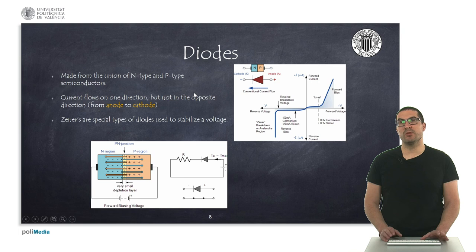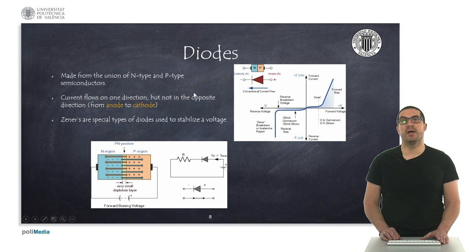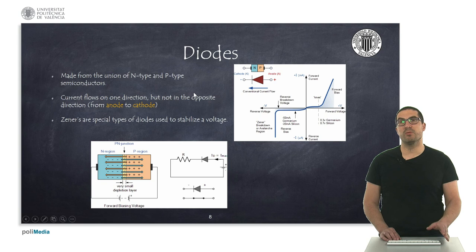Diodes are the most basic semiconductor type. They are made from the union of two different kinds of materials called N-type and P-type semiconductors — different doped materials. The main characteristic of a diode is that current only flows in one direction, so we have to properly polarize the diode to drive the current. There's a special kind of diode called the Zener, which is used for voltage stabilization. But the most common use for diodes is to allow or block the current.